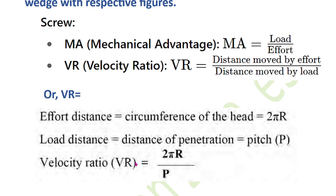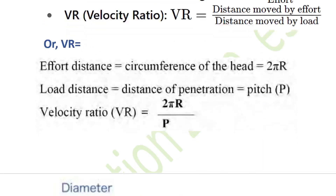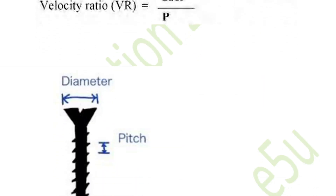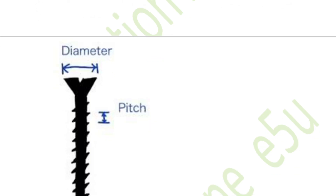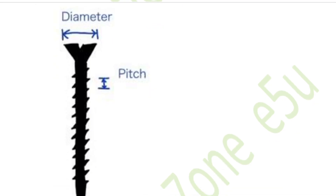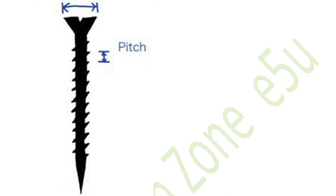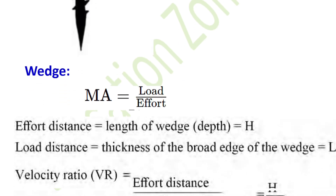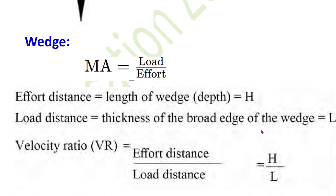The velocity ratio of a screw is equal to 2πR upon p, where R is the radius and p is the pitch. The mechanical advantage is calculated as load upon effort, and the velocity ratio of the inclined plane is h upon l — height upon length.